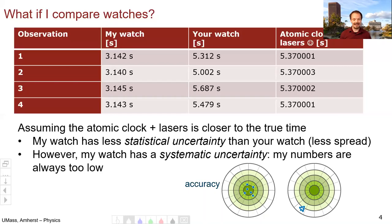Your watch is very accurate, assuming the atomic clock and the laser are closest to the true time. Your numbers are closer to that true time, but they got a lot of spread. They have a lot of statistical uncertainty. Mine, on the other hand, have a small statistical uncertainty. They don't fluctuate very much, but they have a systematic effect that is significant. They lack precision.